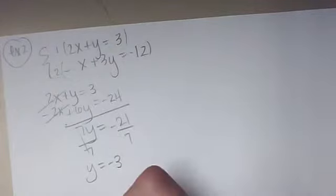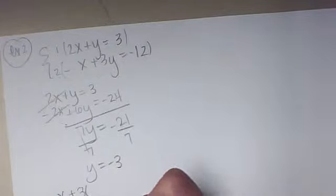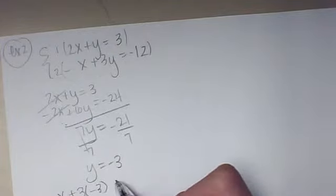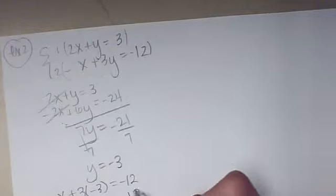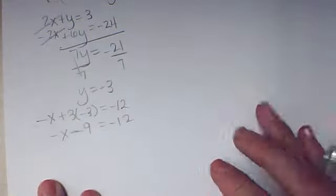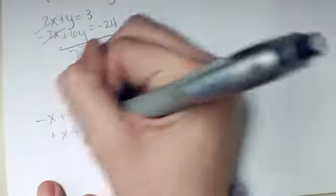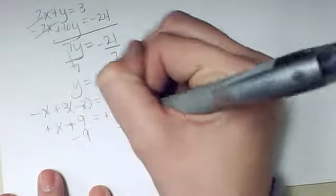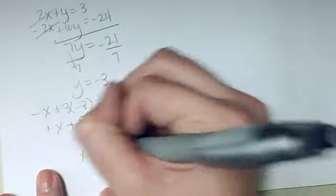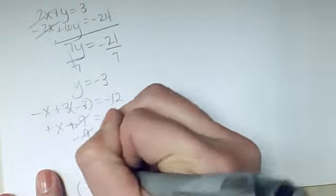Once I have my y value, I want to get my x value. I'm going to choose this second one here. So negative x plus 3 times negative 3 from here equals negative 12. Since I have negative 3 times 3 is negative 9. I don't like all those negatives, so I'm just going to flip right here. Subtract 9 from both sides and x is equal to 3. So our point is 3, negative 3.